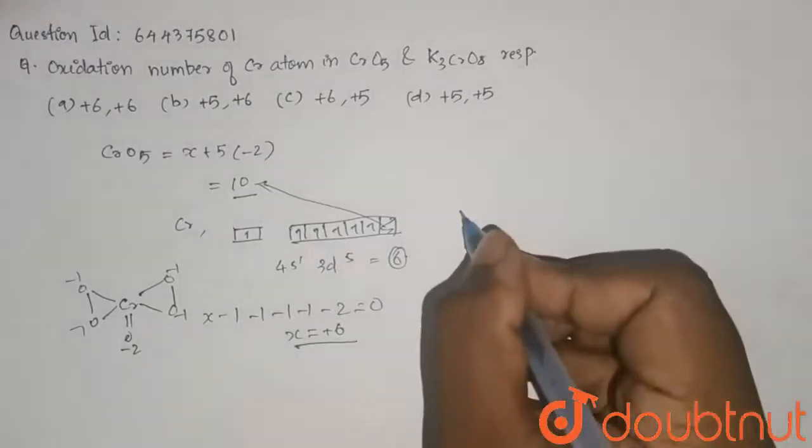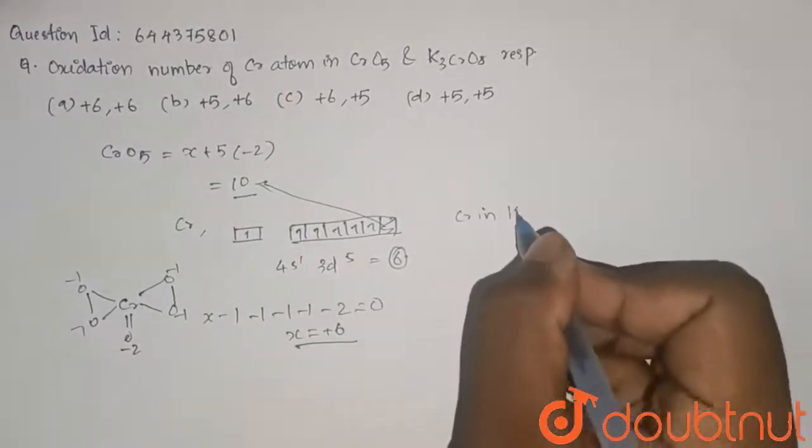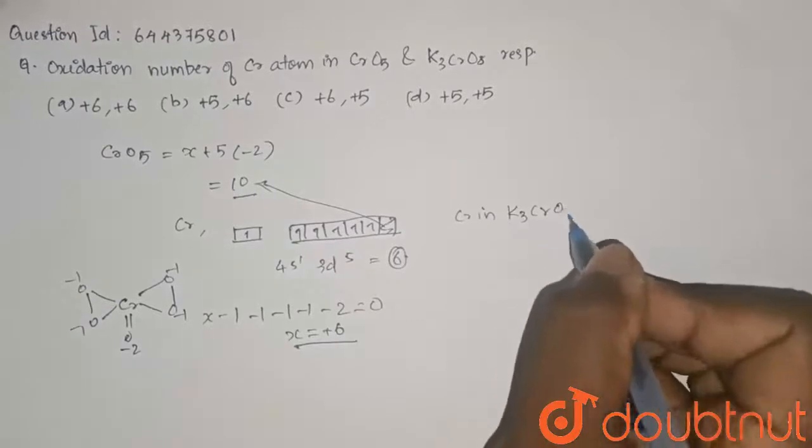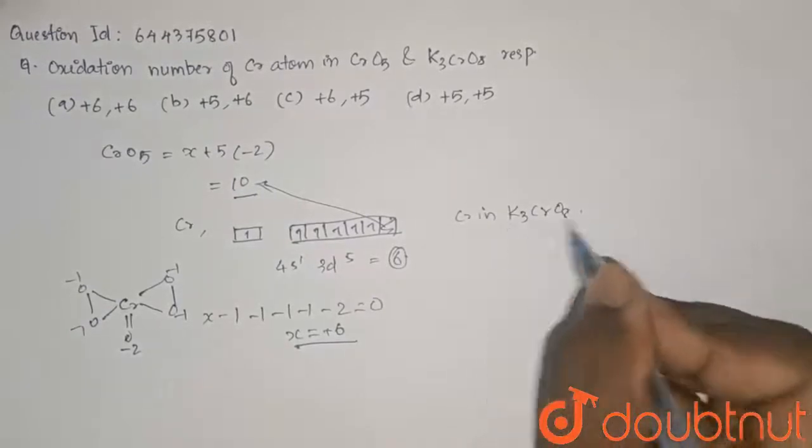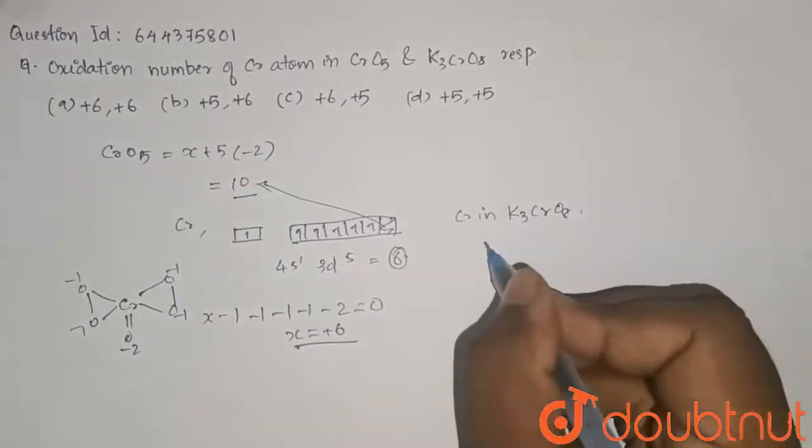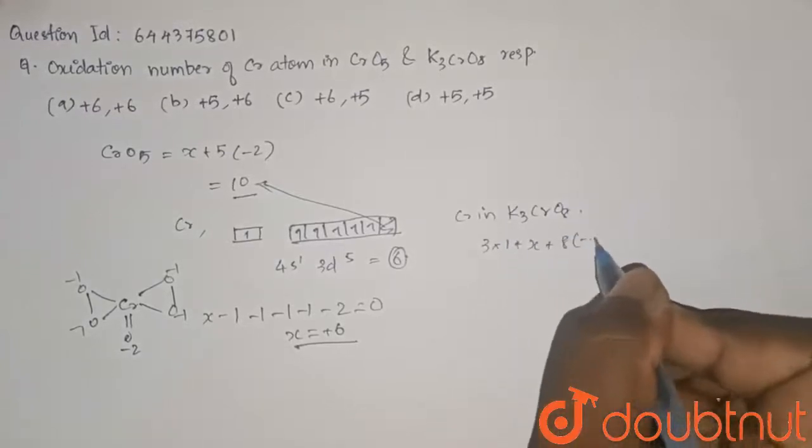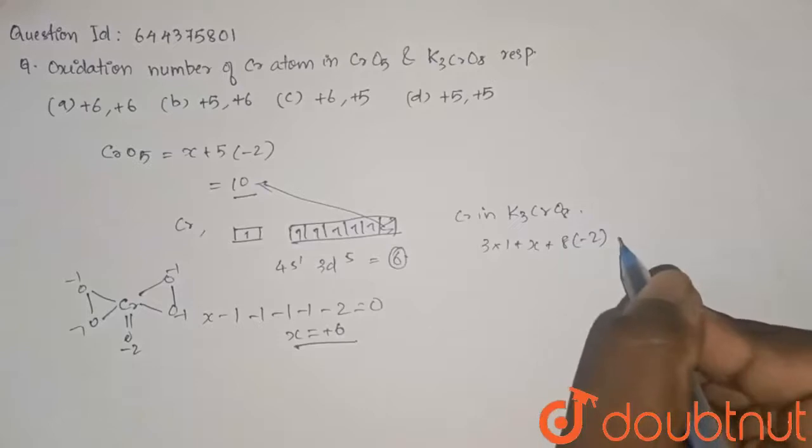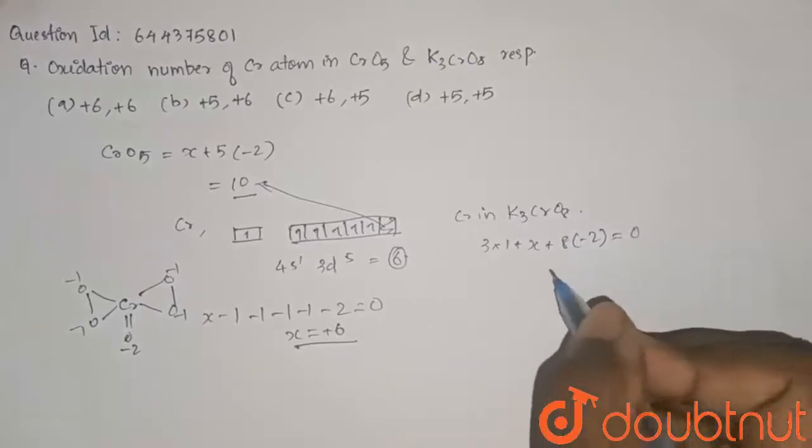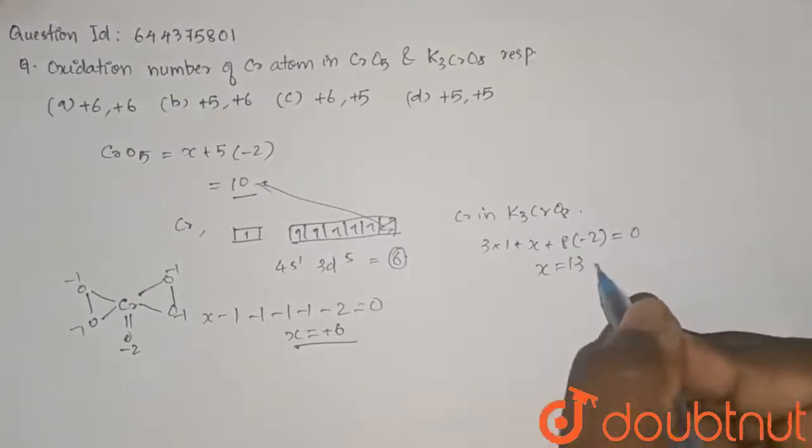Now considering Cr in K3CrO8, here also when we calculate, we'll get 3 into 1 plus X plus 8 into minus 2 as there are 8 oxygen. We'll get X is equal to 13, which will also be wrong.